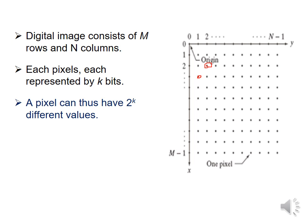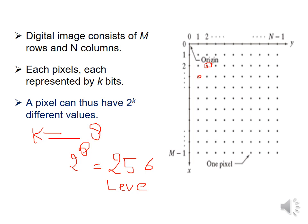If k = 8, then 2^8 gives us 256 possible values, meaning 256 intensity levels exist. For black and white images, 0 can be represented by the black level and 255 — the uppermost level — can be represented by the white level. In between 0 and 255, there will be various shades of grey.